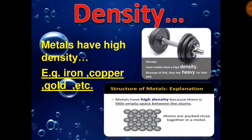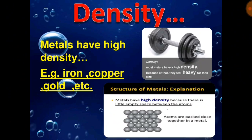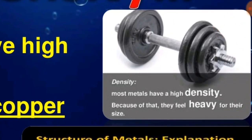Density. Metals have high density, that is the atoms are more closely packed than in non-metals. Examples include iron, copper, gold, etc. You will see this diagram of a weight lifting instrument made of iron.